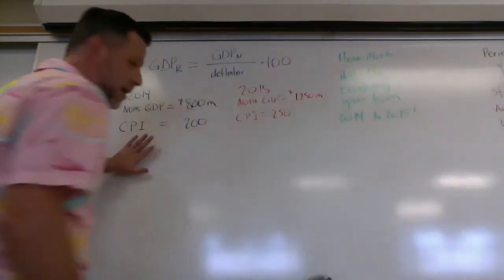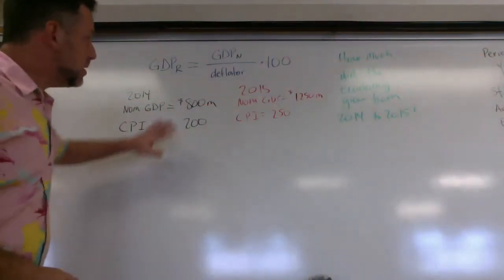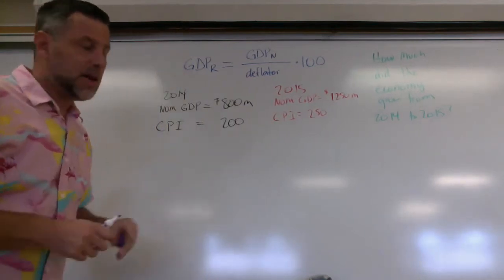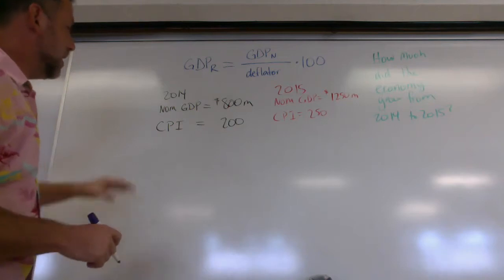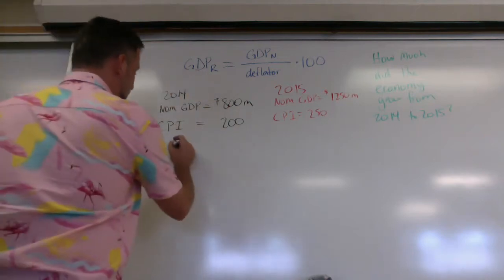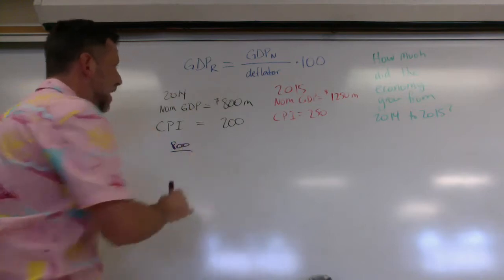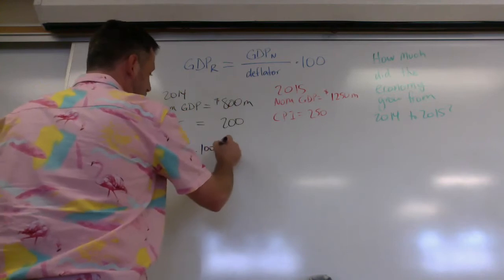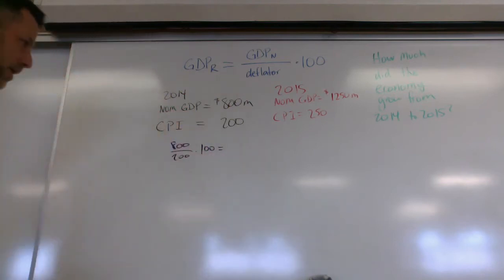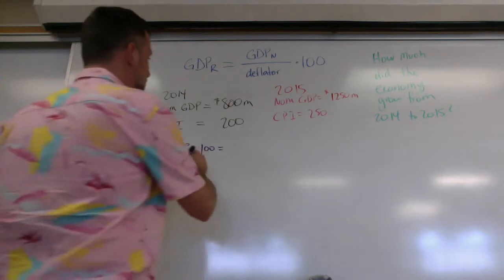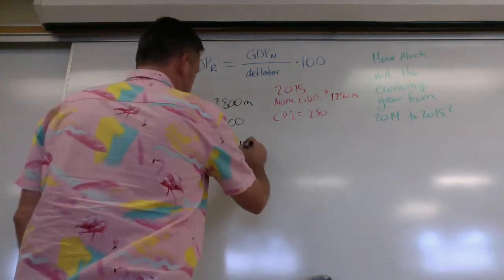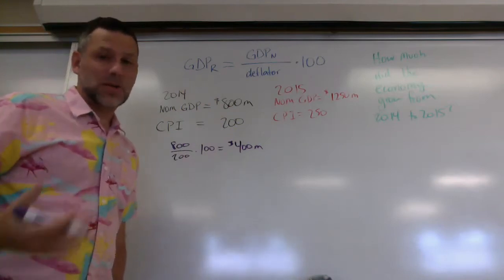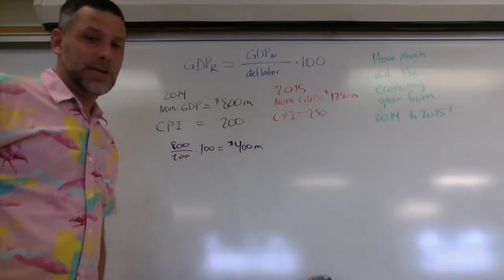So let's start over here with 2014. I'm going to use this equation right up here to get our real GDP. So my nominal is 800. So I'm going to have 800 divided by my CPI number, which is 200 times 100. And what we get there is we end up with four times 100. So we get 400 million is our answer. Real GDP is measured in dollars just like nominal GDP is.